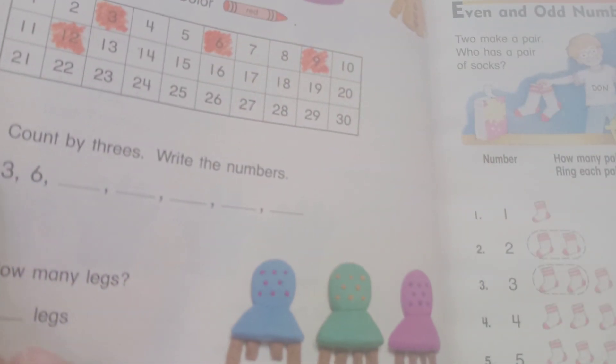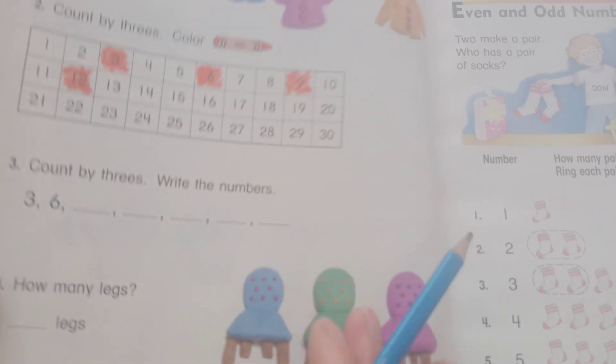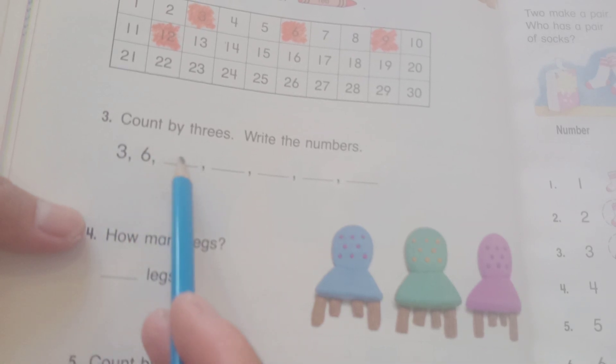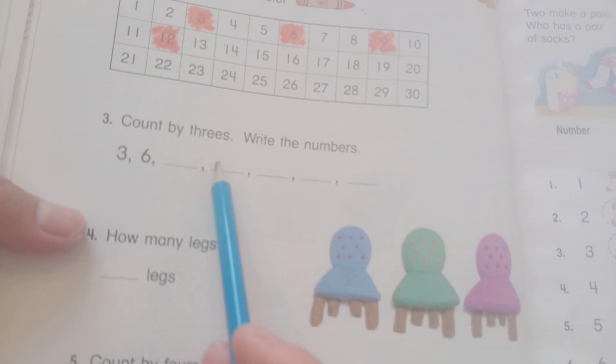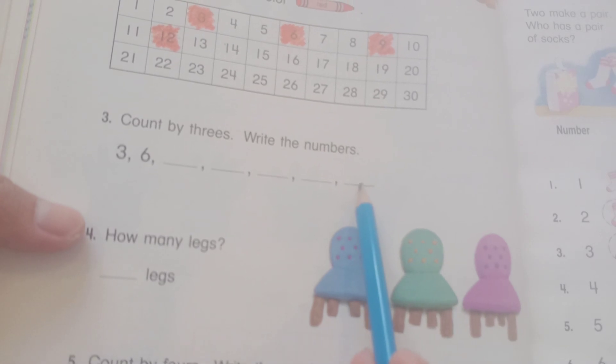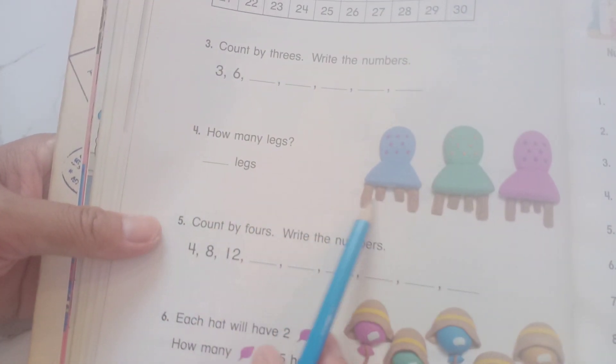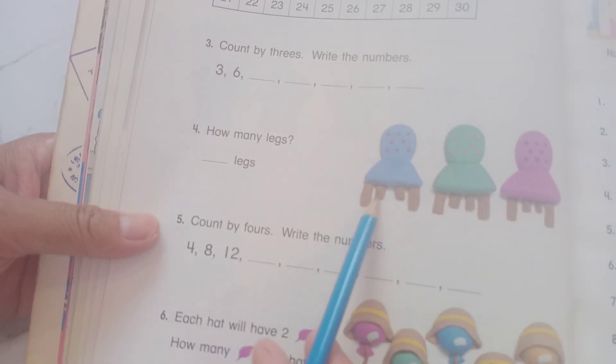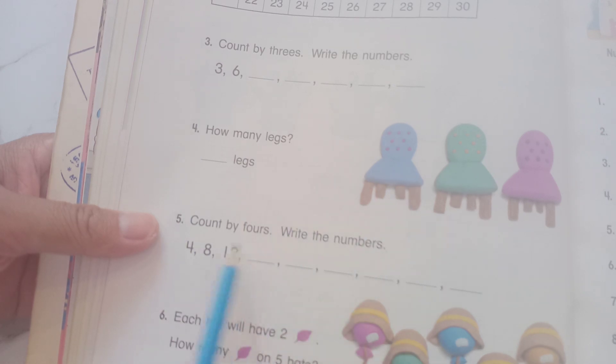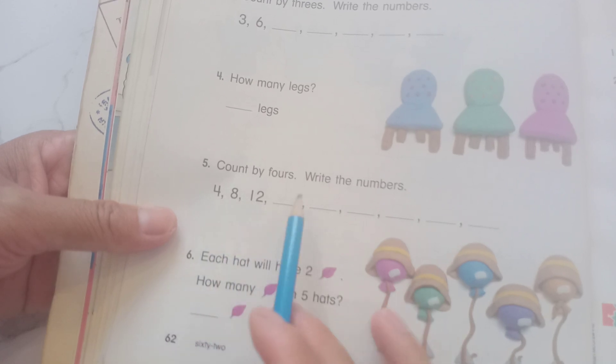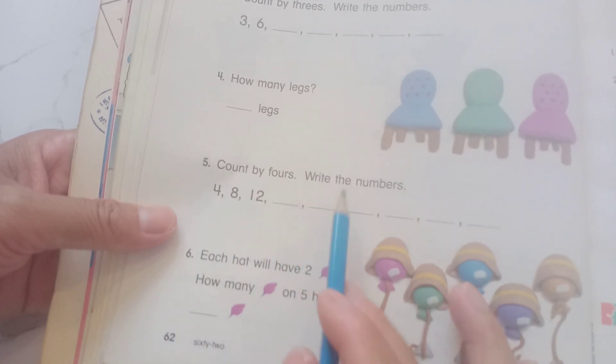So you can write number three: count by three, write numbers. It's a good exercise for you. Three, six, nine, twelve, fifteen, eighteen, twenty-one, twenty-four, twenty-seven, thirty. Now number four, how many legs? You can count: one, two, three, four. Four and three is twelve. So now five, count by four, write numbers: four, eight, twelve, sixteen, twenty, twenty-four, twenty-eight, thirty-two, thirty-six.